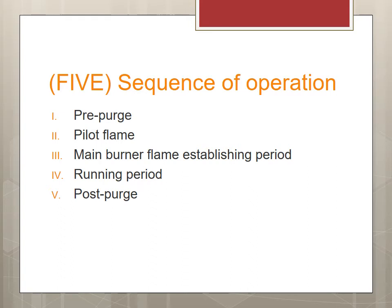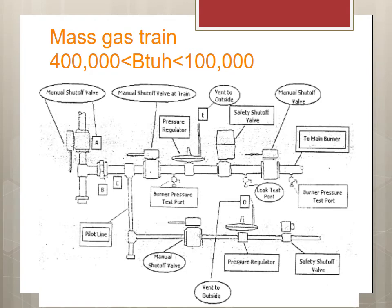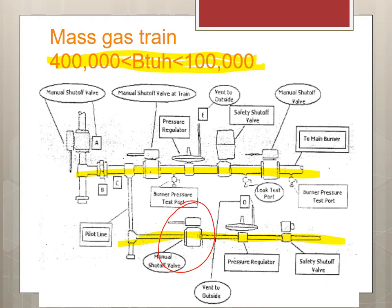There are five main sequences of operation: pre-purge, pilot flame, main flame, running period, and post-purge. Sometimes a sixth step is added — proving the pilot flame. Here's an example of a gas train: this is the main fuel valve and this is the pilot valve. For gas burners between 400,000 and 1,000,000 BTUs, the pilot train requires a Safety Shutoff Valve, a Pressure Regulating Valve, and a Manual Shutoff Valve — manual is very important to have even though the whole system is automatic.